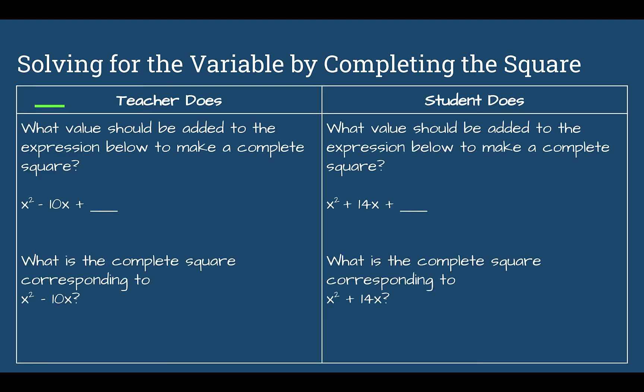Let's look at some examples. This first example asks: what value should be added to the expression below to make a complete square? We have x squared minus 10x plus something. A complete square means we want to get a binomial to the second power — the same binomial factors both times, like we learned about special cases in Topic 7, Lesson 6. There's a quick and easy way to do this.